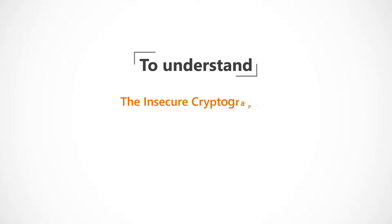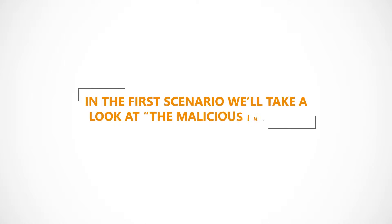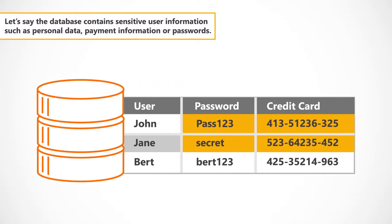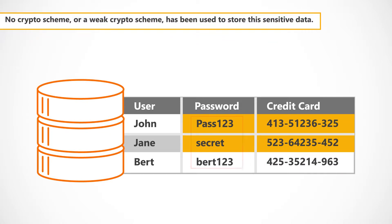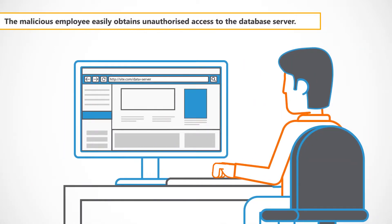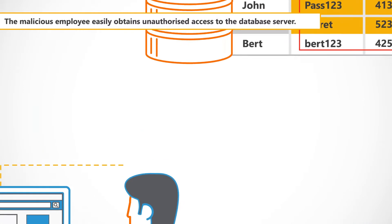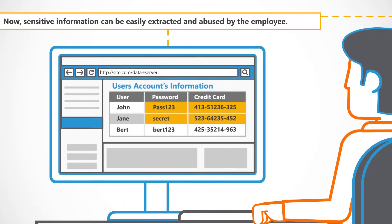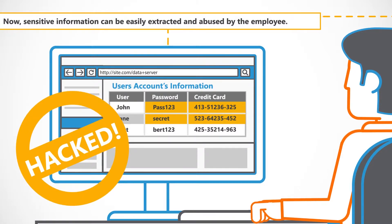To understand the insecure cryptographic storage vulnerability, let's look at some examples. In the first scenario, we'll take a look at the malicious insider. Let's say the database contains sensitive user information, such as personal data, payment information, or passwords. No crypto scheme or a weak crypto scheme has been used to store this sensitive data. The malicious employee easily obtains unauthorised access to the database server. Now, sensitive information can be easily extracted and abused by the employee.